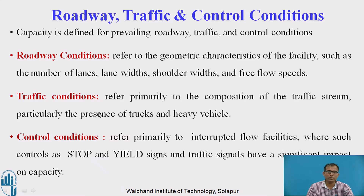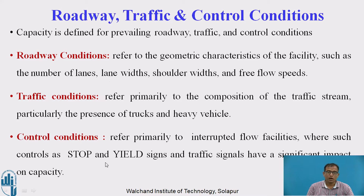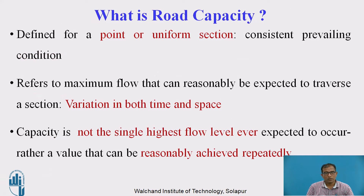Maintaining prevailing roadway, traffic, and control conditions is very difficult, because every traffic stream has interference from trucks and heavy vehicles, changes in geometry, or stop and yield signs at intersections. Keeping all these factors, we measure the capacity of a road. Capacity is defined at a particular point, stretch, segment, or uniform section consisting of prevailing conditions.